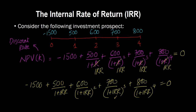Here's the problem — this is not easy to solve. IRR is raised to the power of 4, requiring a lot of rearranging to find its actual value, making it very hard to do by hand. You either need a financial calculator or Microsoft Excel — I'll show those in separate videos. The only way to do this by hand is using the trial and error method.